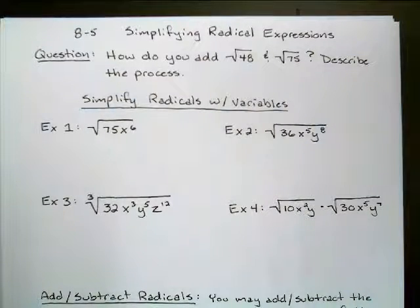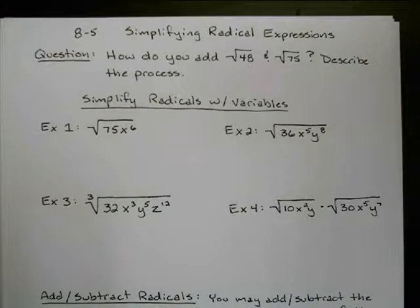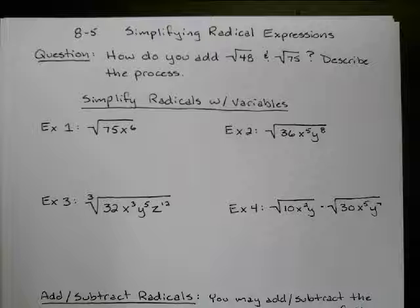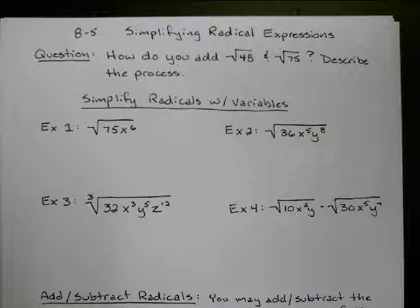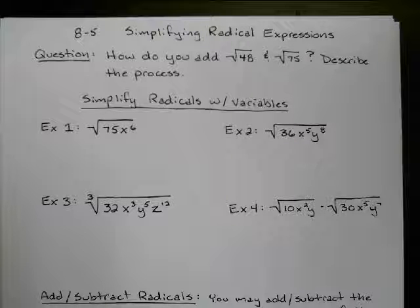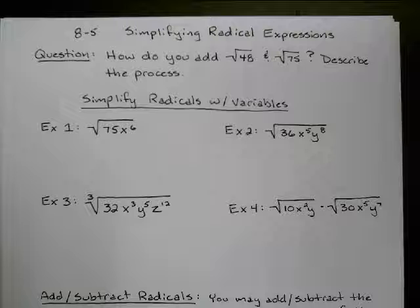So we're going to simplify some radical expressions. Our question today is, how do you add the square root of 48 and the square root of 75? And you might be saying, well, don't you just add 48 and 75?